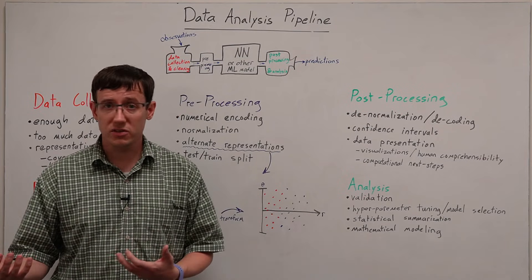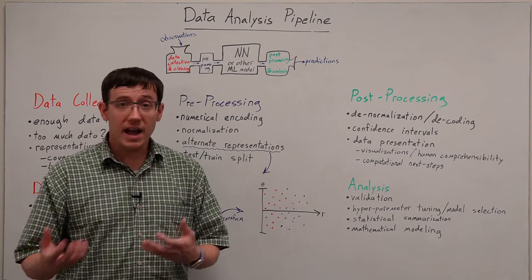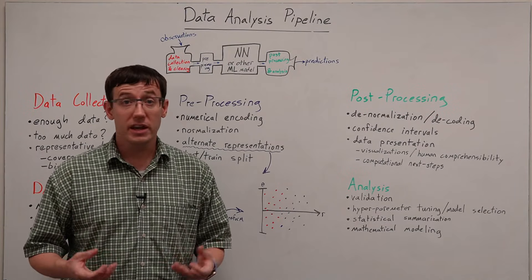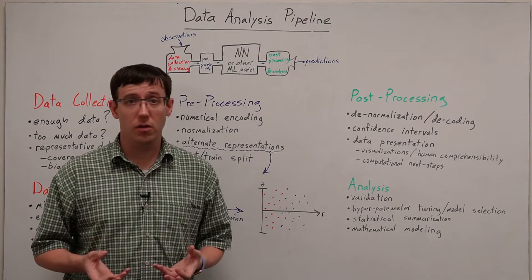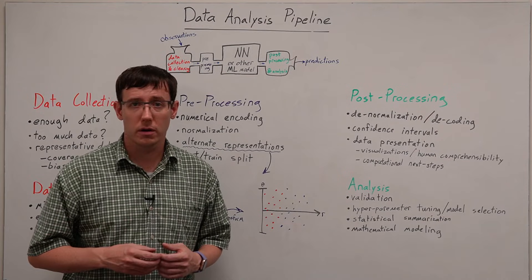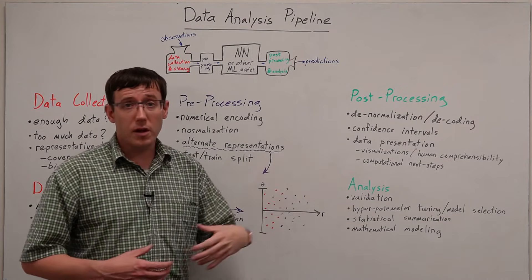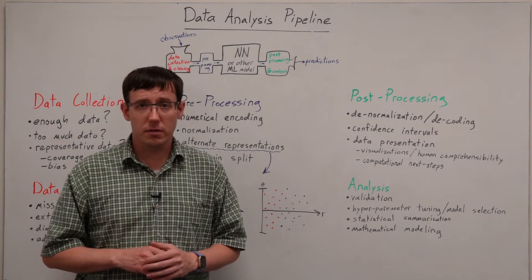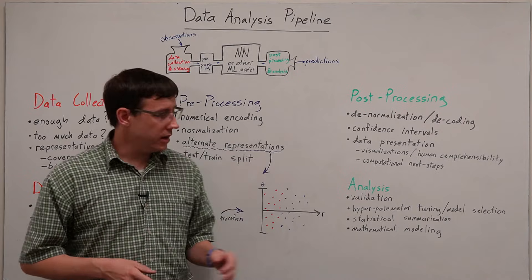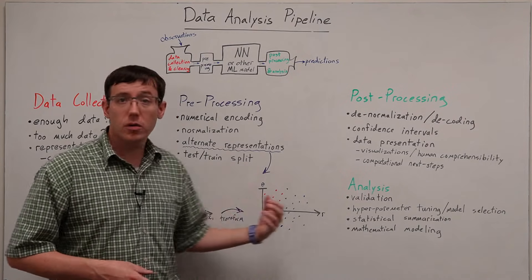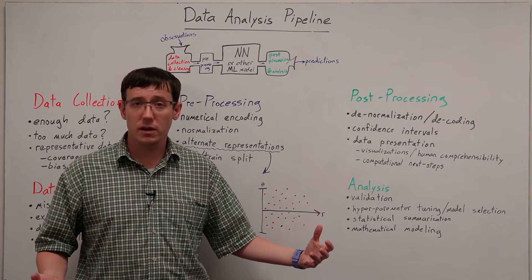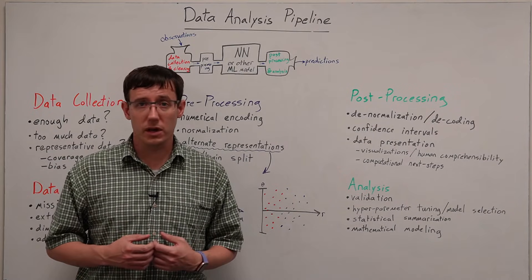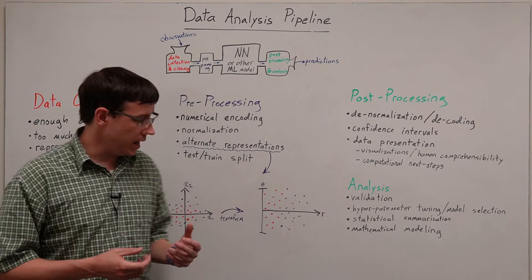But when we want to process text data, the ASCII format that computers use to store text files is extremely unhelpful for a neural network. And so we'll want to think about alternate ways that the same dataset can be represented. And the simplest idea I can give of transforming the representation of a dataset comes from the linear models we've already seen, where, to do good classification, we need data that can be cleanly separated by a linear decision boundary.